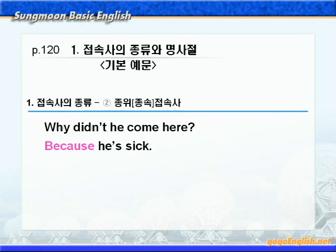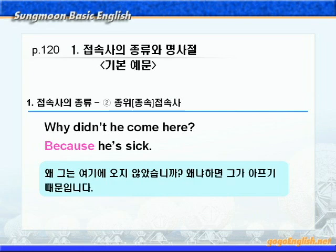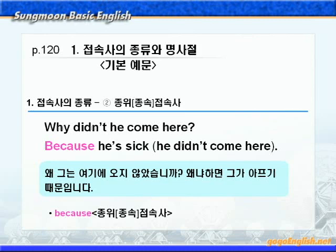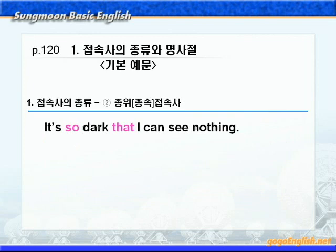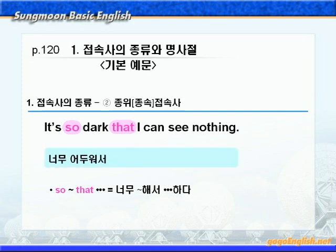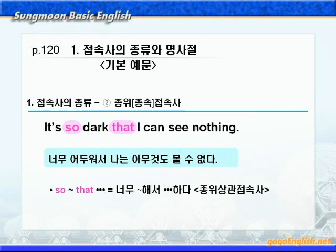'Why didn't he come here? Because he's sick.' 왜 그는 여기에 오지 않았습니까? 왜냐하면 그는 아프기 때문에. 즉, 그는 아프기 때문에 이곳에 오지 못했다. because he's sick 다음에 he didn't come here라는 주절이 생략되어 있는 것이죠. 따라서 여기 because는 종속접속사가 되겠습니다. 다음 'It's so dark that I can see nothing.' so 형용사/부사 that 구문으로 너무 어두워서 나는 아무것도 볼 수 없다. 여기 so~that처럼 서로 떨어져 있으면서 상관적으로 작용하여 하나의 종위접속사 역할을 하는 것을 종위상관접속사라고 하죠.